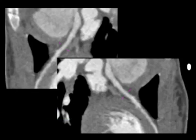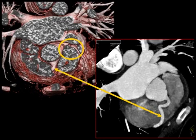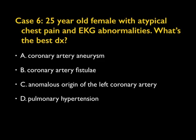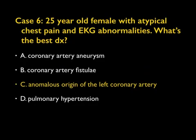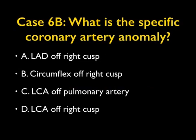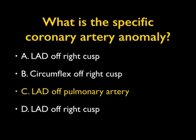Here it is again — you can see it here and in 3D. The question is: what's the best diagnosis? There's a coronary artery, but it's coming off an anomalous origin — not from the cusp of the aorta. The specific answer is that it's the patient's left anterior descending artery coming off the pulmonary artery.